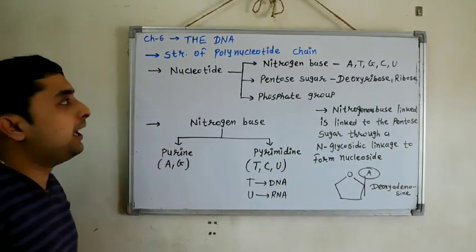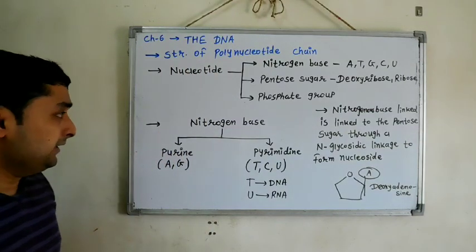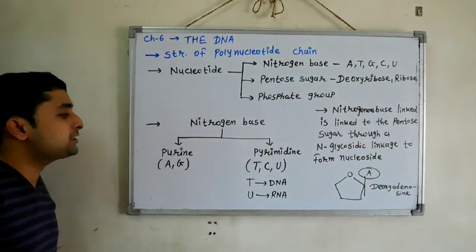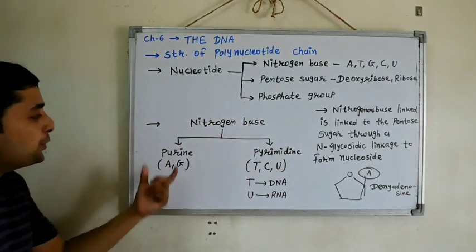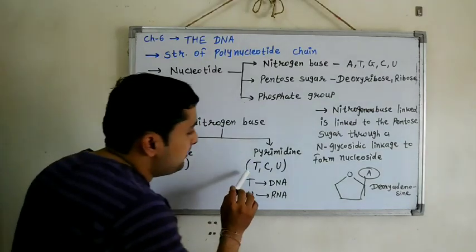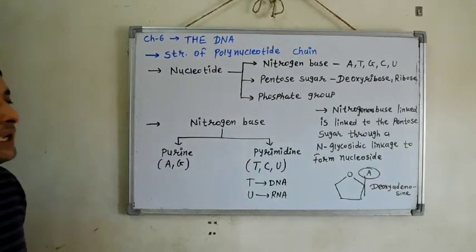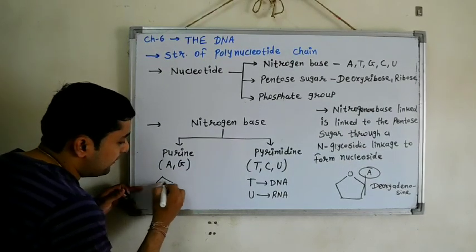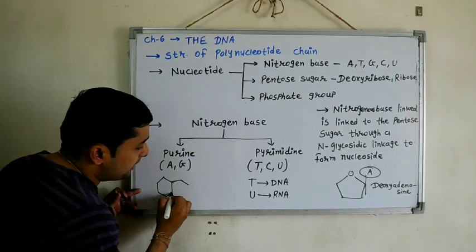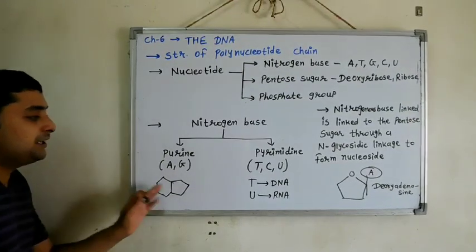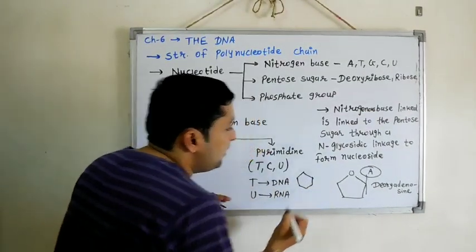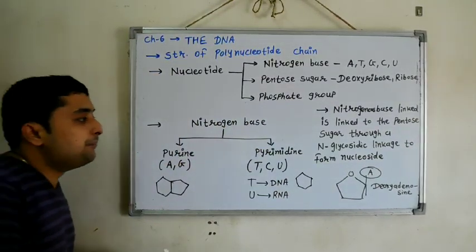Then nitrogen bases - there are two different types: purine and pyrimidine. Purines are adenine and guanine, whereas thymine, cytosine, and uracil are pyrimidines. Purines contain two heterocyclic ring structures, whereas pyrimidines contain a single ring structure.